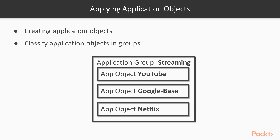You can have policies applied to inbound or outbound traffic based on application. The Palo Alto inspects the packet as it flows through the zone and determines what application it matches. For example, you can block Facebook, allow Netflix but deny Hulu, allow Windows updates only to certain subnets, or allow C-level executives access to every application while denying the rest of the environment.